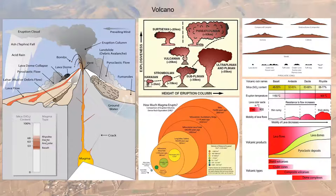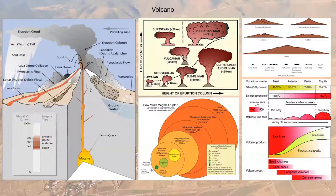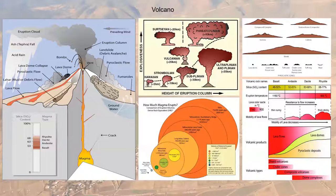Depending on the composition and volatile content, we get different products. Magma comes to the surface through a conduit, which can have several sub-conduits or passages depending on the tectonic configuration. It's like agitating a bottle of Coca-Cola and opening the cap — all the gases erupt, forming an eruptive column. We also call this a mushroom cloud. Depending on wind direction, the cloud migrates and once it loses energy, material falls due to gravity.